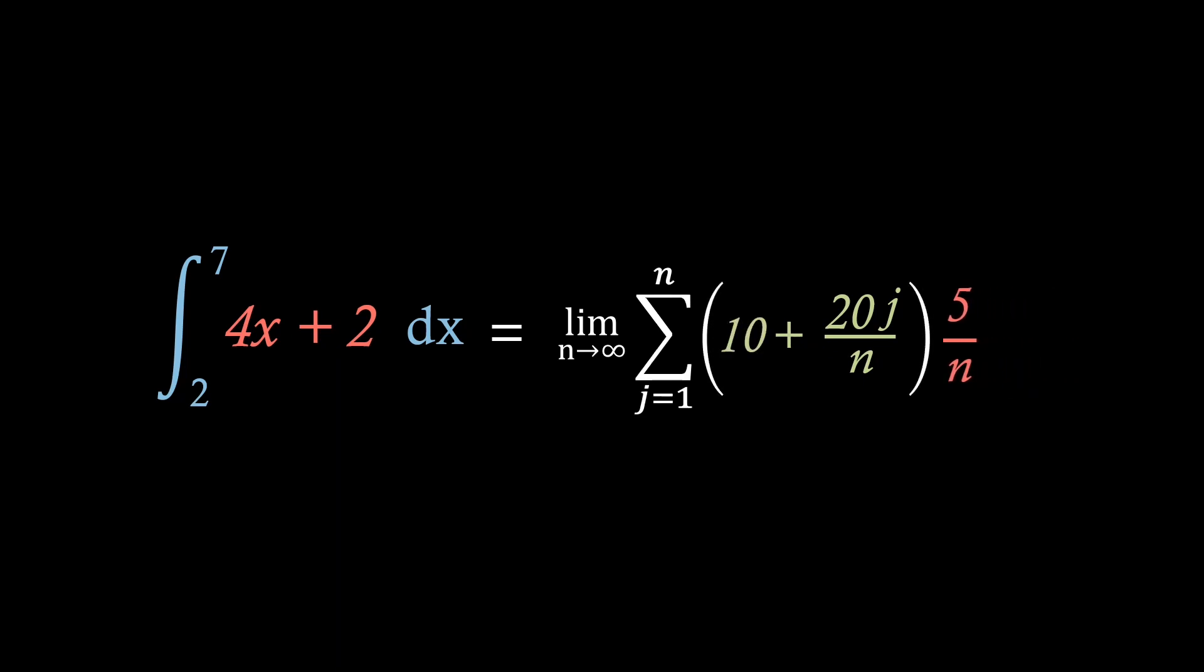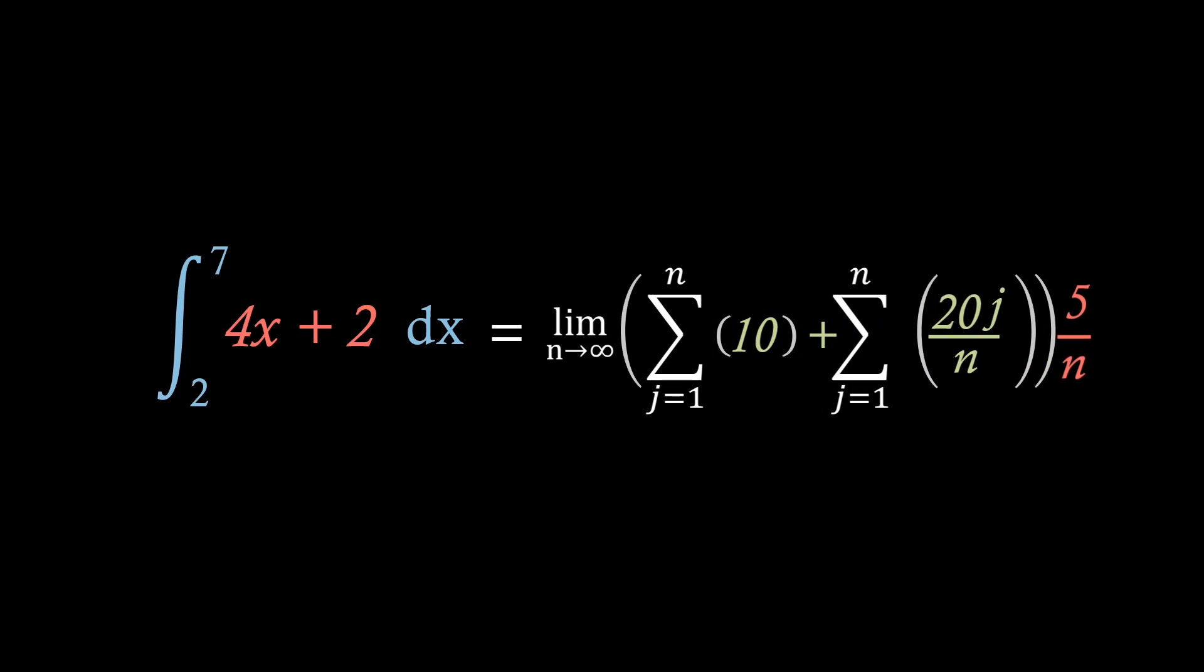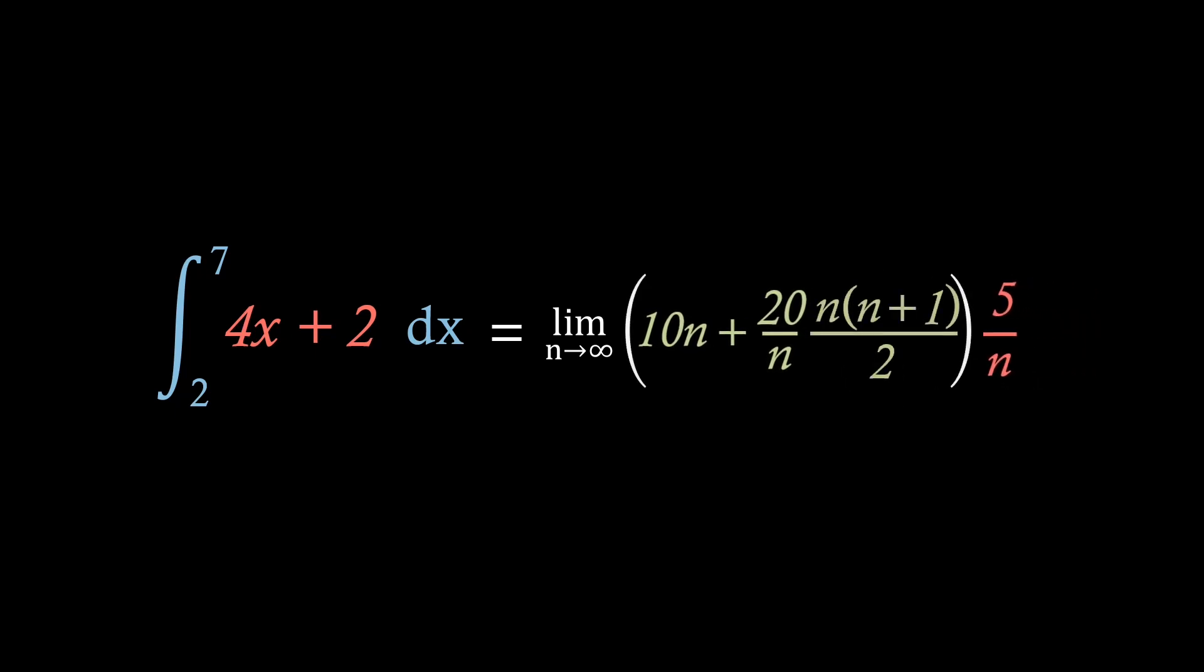We're now going to split this bracket into two sums to make it easier to handle. We know that the sum of an integer from 1 to n is just that integer times n itself, hence why we get this 10n here. Then, for this other sum, we'll pull out the 20 over n as a constant. Then, we can use the summation formula, that the sum from j equals 1 to n of j is n times n plus 1 all over 2. Now, it's starting to look a lot more manageable.